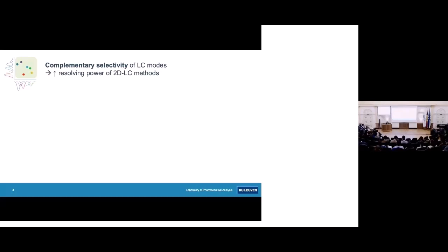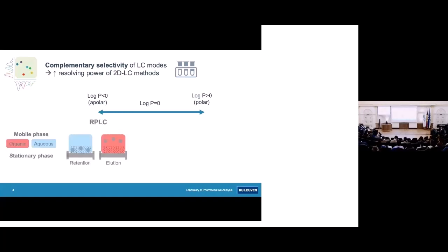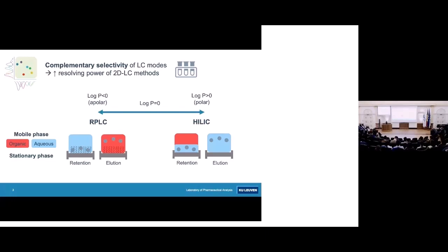To gain as much resolving power as possible for 2D LC methods, it's important to select LC modes that are sufficiently complementary. For example, when you analyze samples containing compounds with a wide polarity range, an interesting combination is reverse phase liquid chromatography and hydrophilic interaction liquid chromatography. In reverse phase LC, the stationary phase is more hydrophobic, and compounds elute when you increase the percentage of organic in the mobile phase. In HILIC, the stationary phase contains a water layer in which polar compounds are more retained, and they elute by increasing the percentage of water — so these two modes have complementary selectivity.